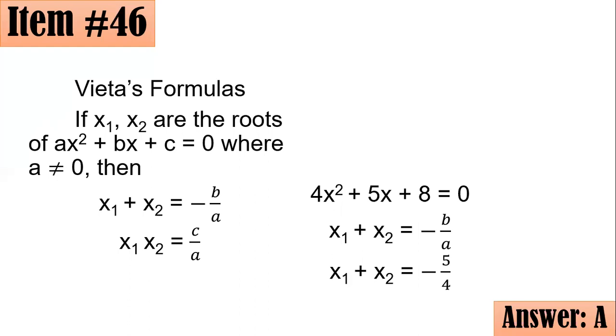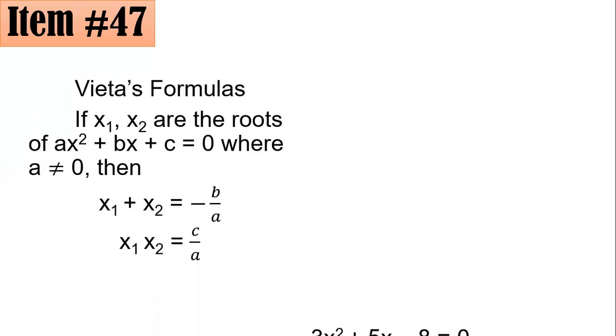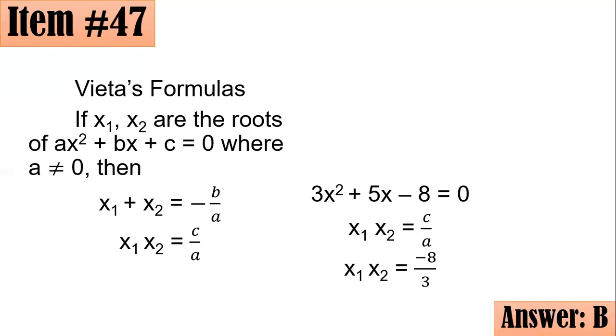47. For 47, it's asking for the product of the roots. What is the product of the roots of 3x² + 5x - 8 = 0? Is it -5/3, -8/3, 3/8, or 8/3? So based on the previous slide, the product of the roots is c/a. And if you have 3x² + 5x - 8 = 0, so our c is -8, and our a is 3. So their product, x₁ × x₂, is equal to -8/3, letter B.